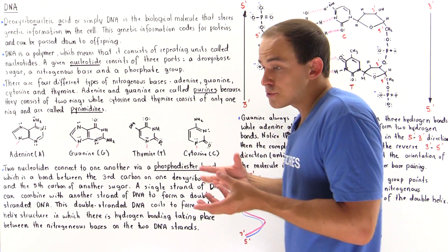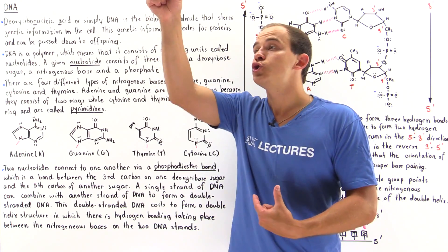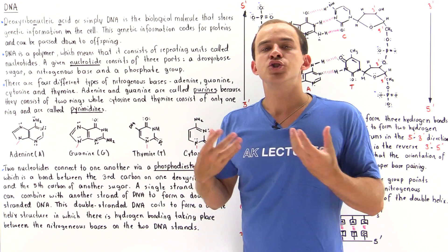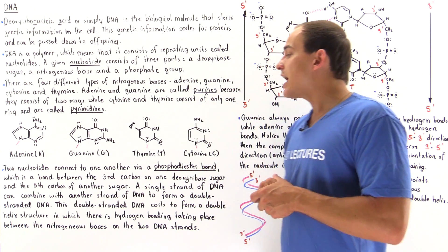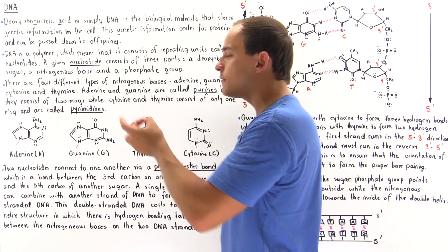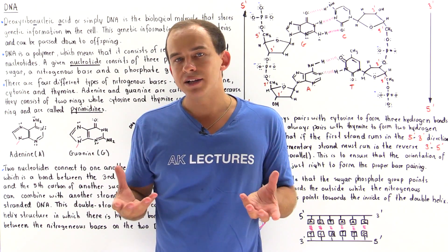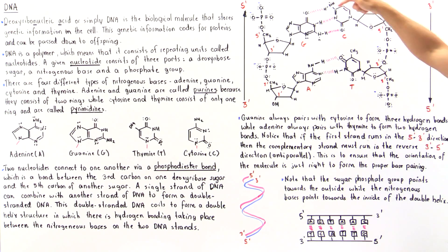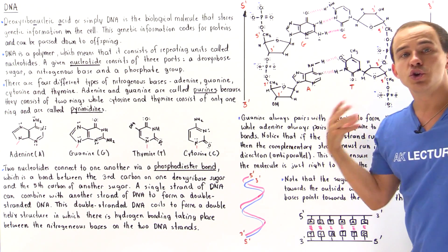DNA in cells — specifically in human cells — doesn't actually exist as a single strand. In fact, two strands of DNA that are complementary to one another actually bind to form a double-stranded DNA. That double-stranded DNA forms a coil that we call the double helix. The two single-stranded DNAs bond to one another via a special type of dipole-dipole bond known as hydrogen bonds, which hold the two strands together.